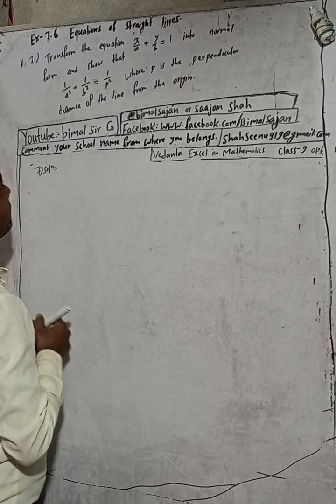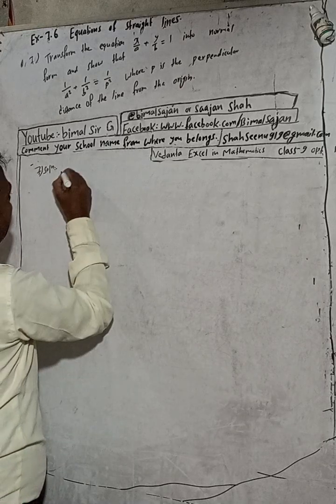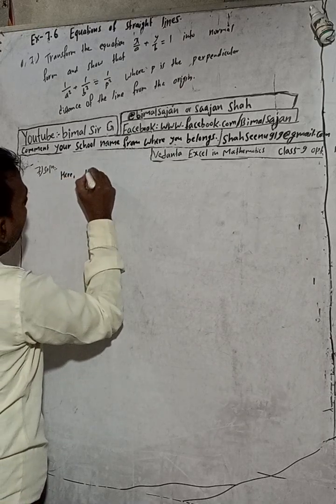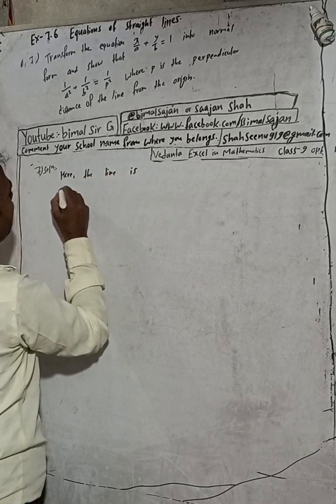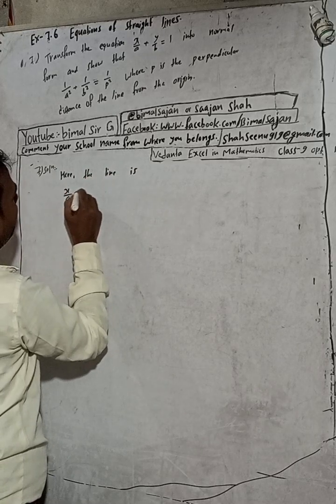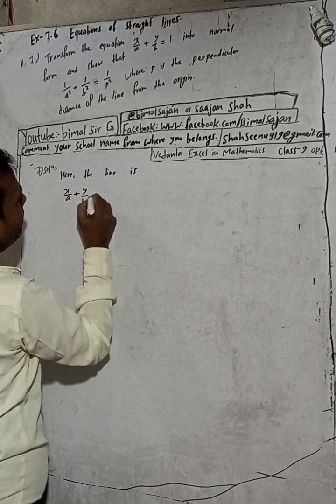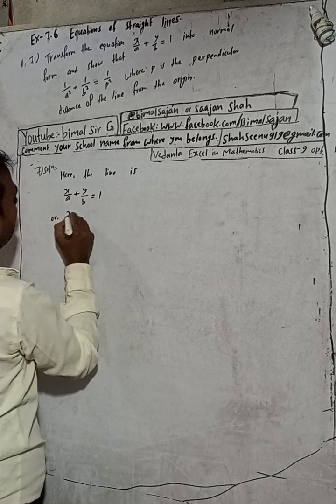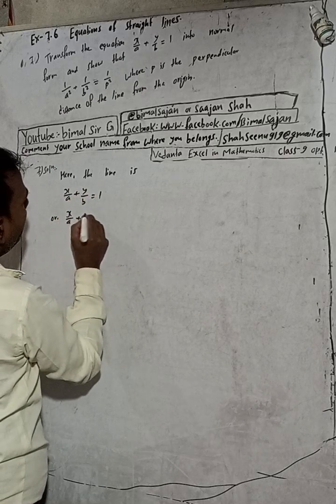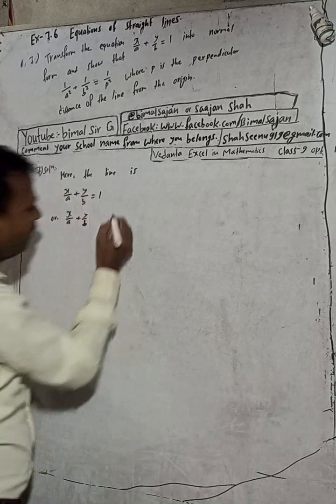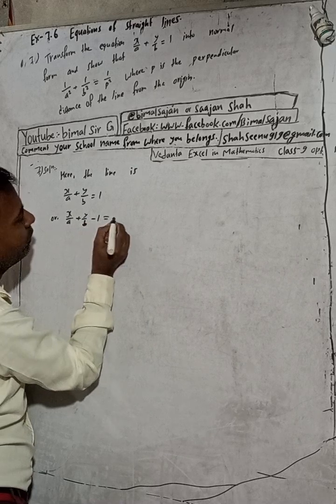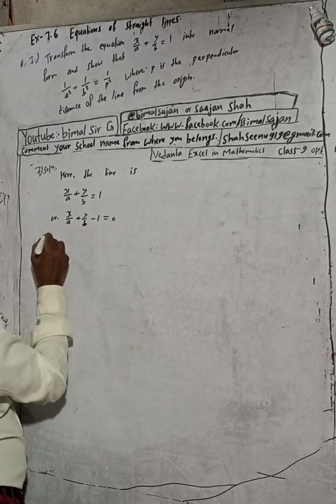Now we can write here, the line is x/a plus y/b equals 1, or x/a plus y/b minus 1 equals 0, equating the equation.